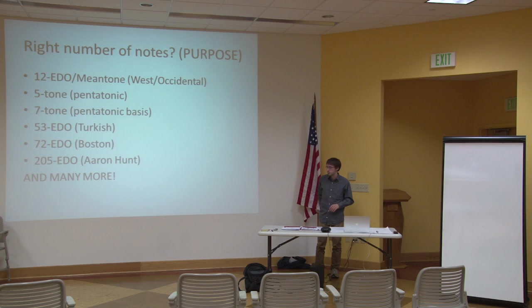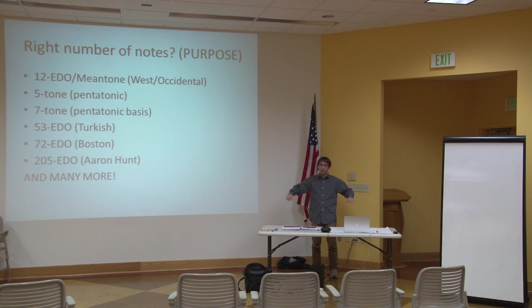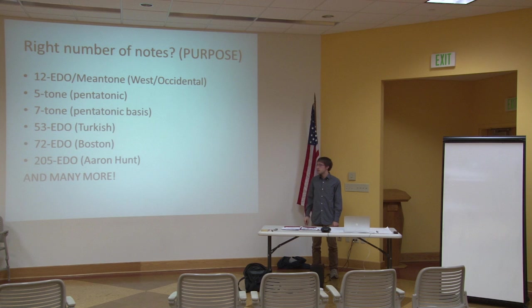72-tone equal is used by the Boston Microtonal Society — it is a 12-times-N system. A question arose: EDO stands for 'equal division of the octave.' So the thing I explained with the piano and octaves — hearing the same distance — applies to any number with EDO after it. One EDO would just be the octave, two EDO would be our tritone, three EDO would be our diminished chord. That's all EDO means.